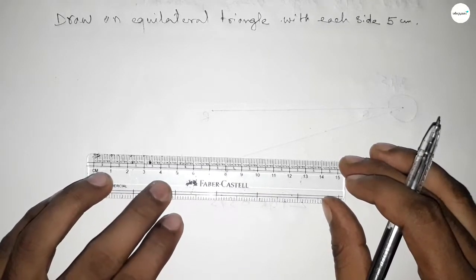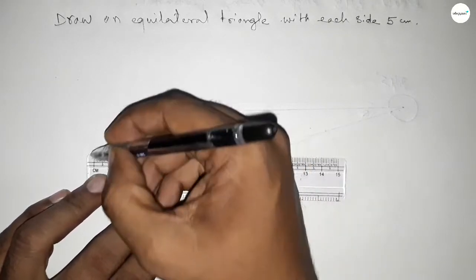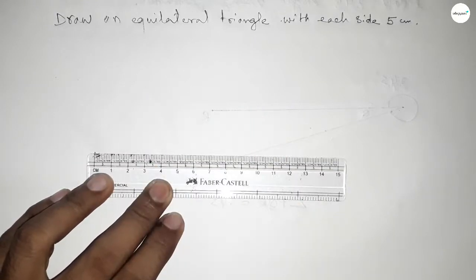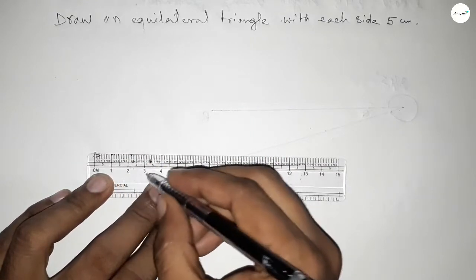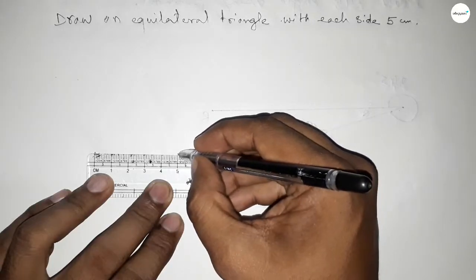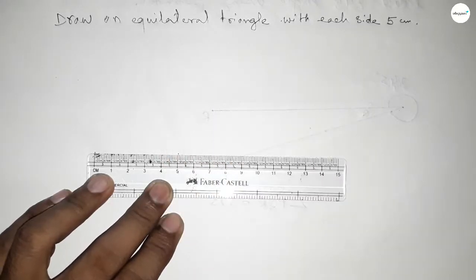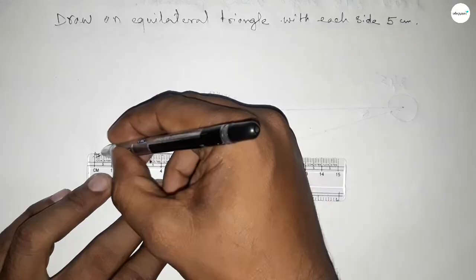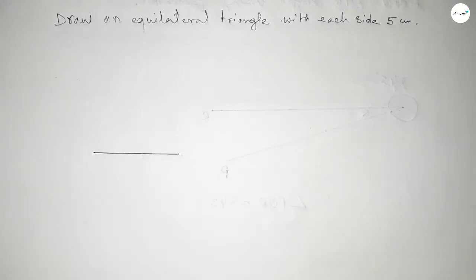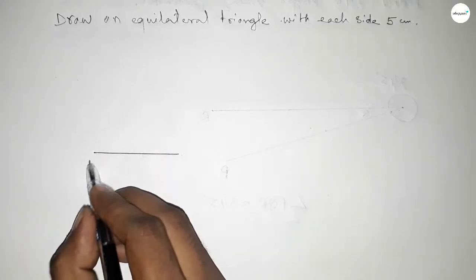a line with length 5 centimeters. First taking length, this is starting 0 and this is 1, 2, 3, 4, 5. So this is 5 centimeters. First drawing a line of length 5 centimeters, and this is A and B, so AB equals 5 centimeters.